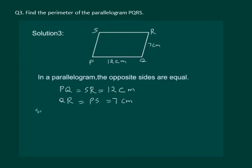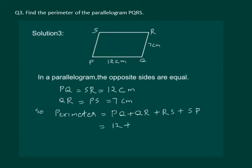Therefore the perimeter equals PQ plus QR plus RS plus SP, which equals 12 plus 7 plus 12 plus 7, which is equal to 38 centimetres.